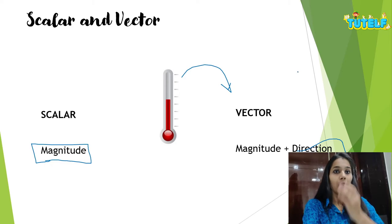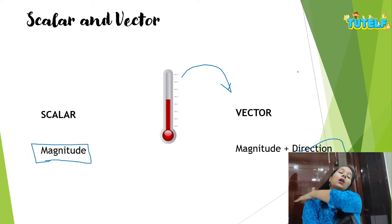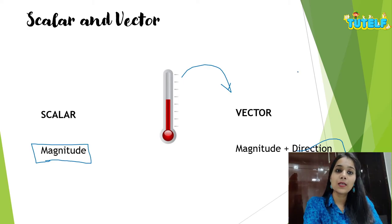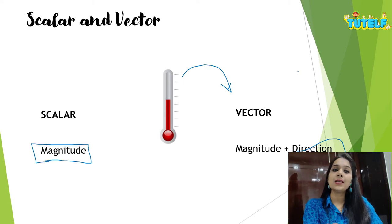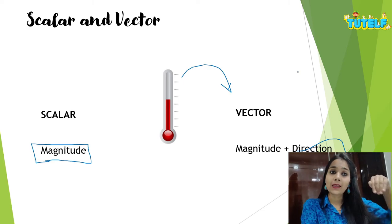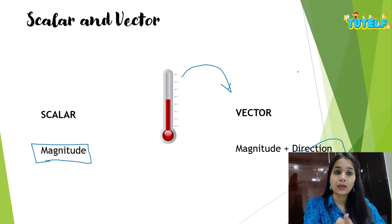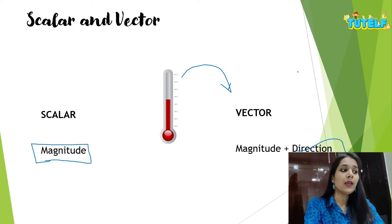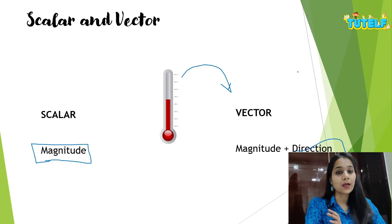Weight is a vector quantity because the mass is applied in the downward direction. When both magnitude and direction are present, it is a vector quantity. When only the magnitude is there, it becomes a scalar quantity.